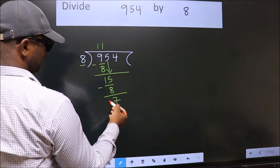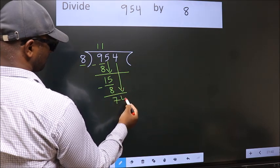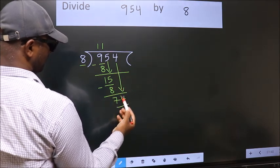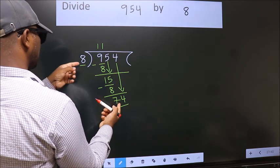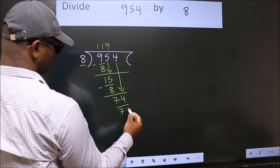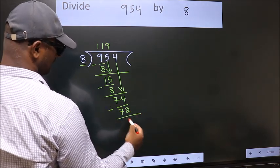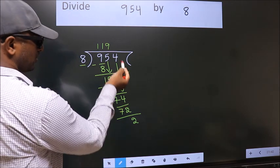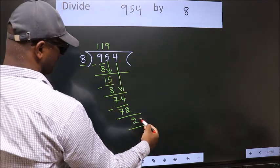After this, bring down the beside number, so 4 down. So 74. A number close to 74 in 8 table is 8 nines 72. Now we subtract, we get 2. No more numbers to bring down, so we stop here.